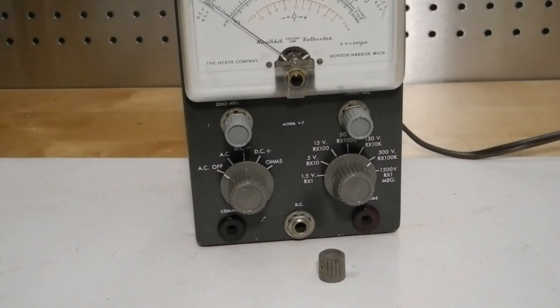One of the small knobs was missing. I've created some designs for 3D printing Heathkit knobs, so I made two matching small knobs using my 3D printer.